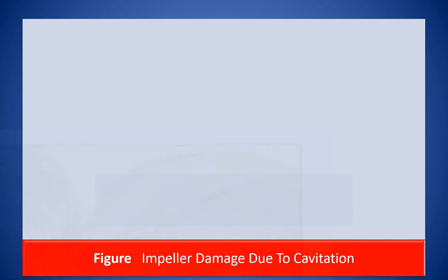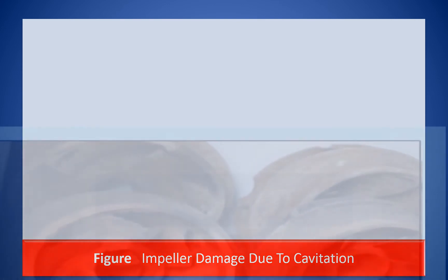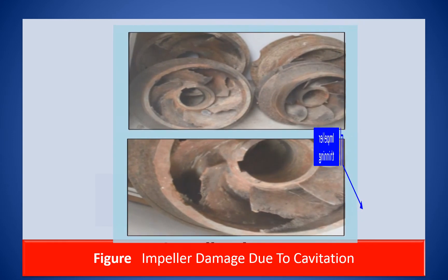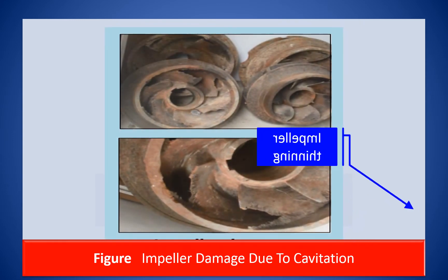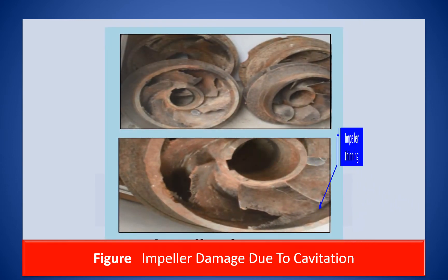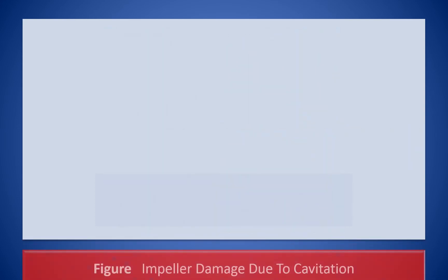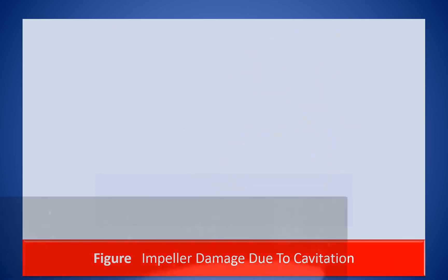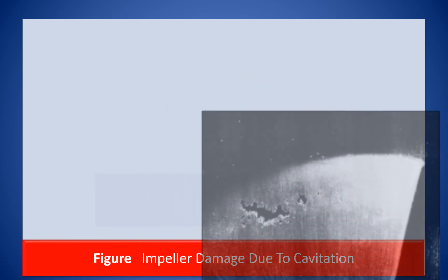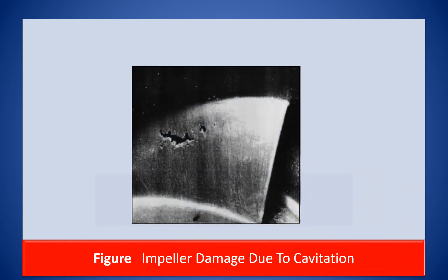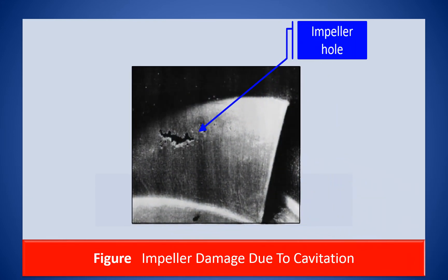This figure illustrates how cavitation causes thinning of the impeller vanes. This figure shows how a hole has formed on the impeller due to cavitation.